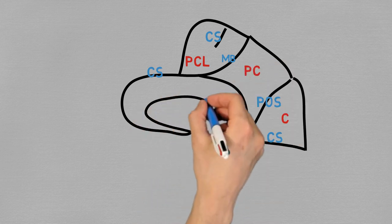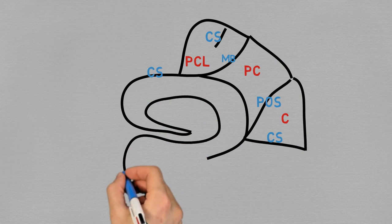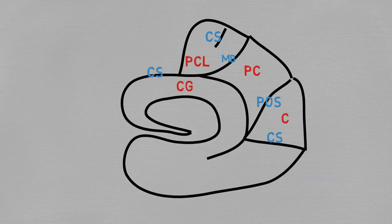Now we can add the inferior border of the cingulate gyrus, and continue on to the inferior margin of the brain, and now we have enclosed the temporal and the occipital lobes.